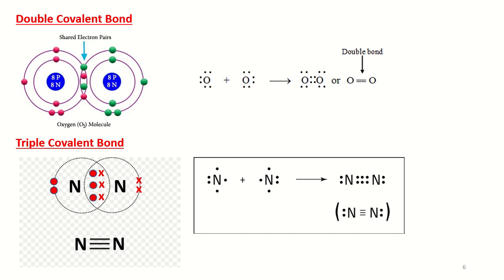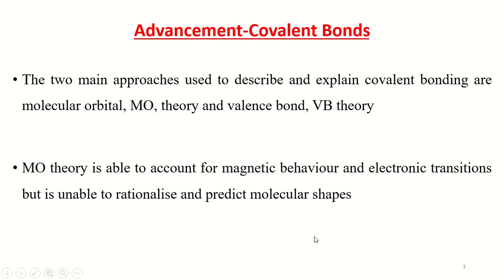The same is the case with nitrogen. Because of the sharing of 3 electron pairs between the nitrogen atoms, this forms a triple covalent bond due to the sharing of 3 electron pairs between 2 nitrogen atoms.